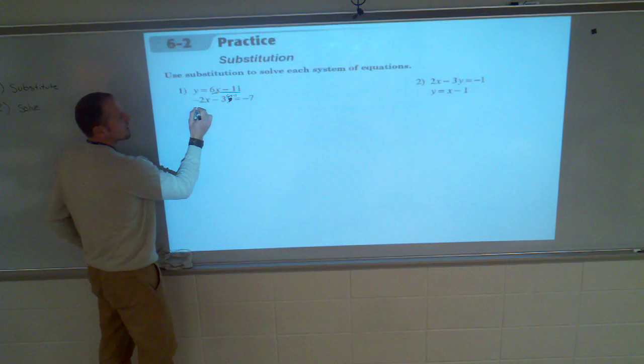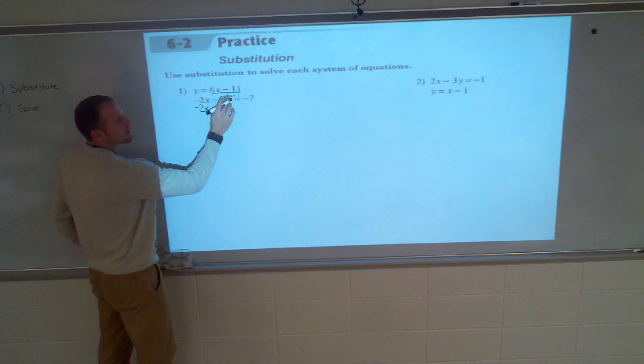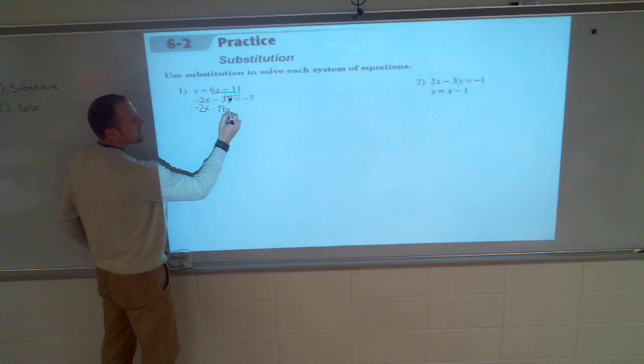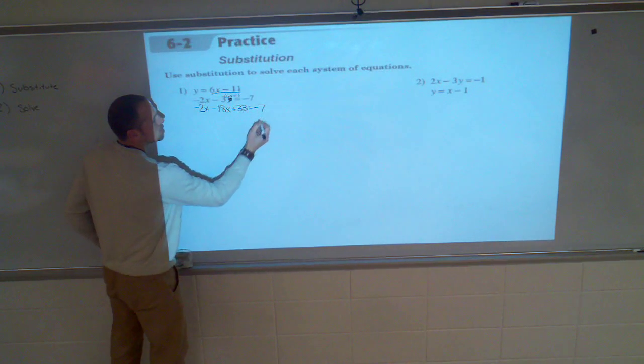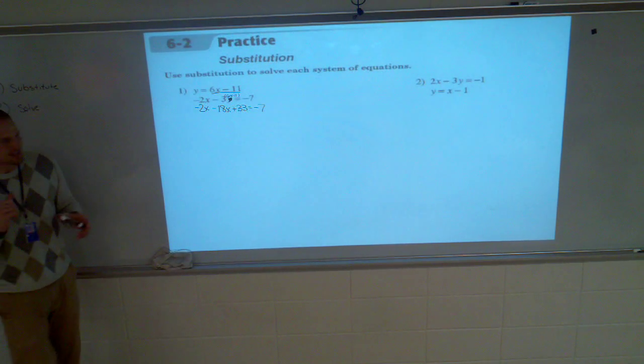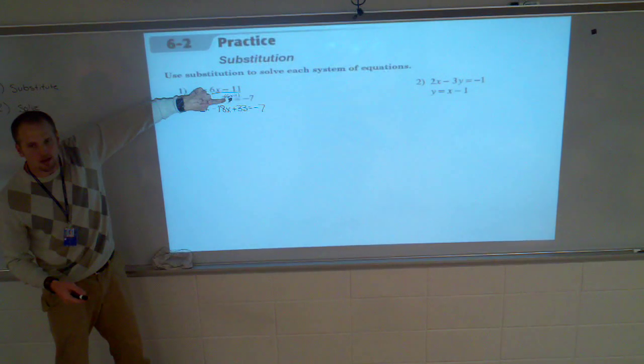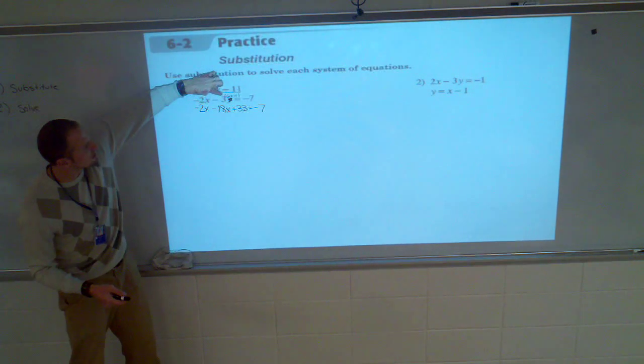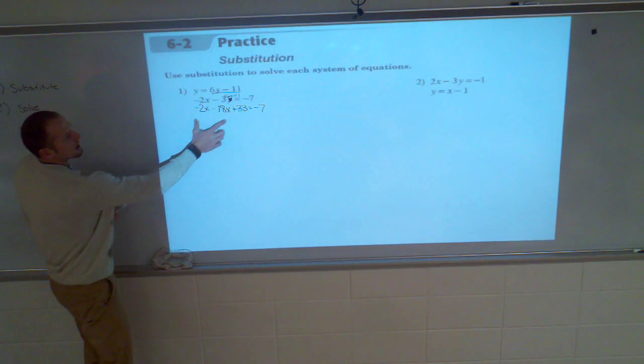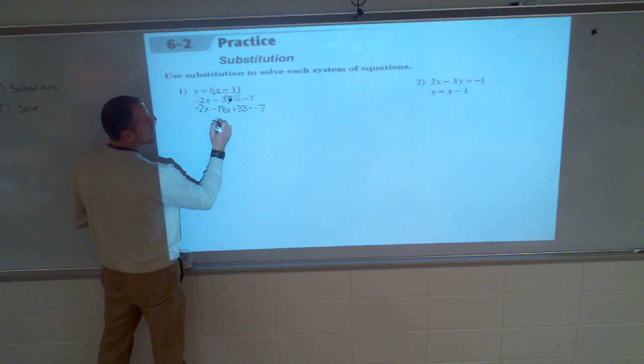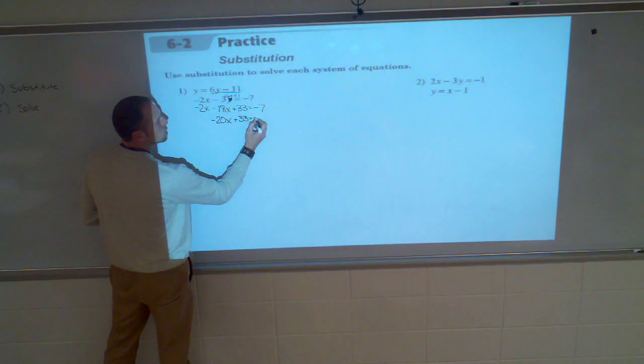Now, let's solve this. This is going to be negative 2X. This is the distributive property. Negative 3 times 6X is negative 18X. Negative 3 times negative 11 is a positive 33, is equal to negative 7. Is everybody okay with how I substituted this in for Y? And then how I took this distributive property to right here. Now let's simplify this. Negative 2X, negative 18X, this is going to be negative 20X plus 33 is equal to negative 7.